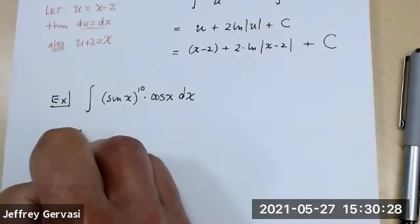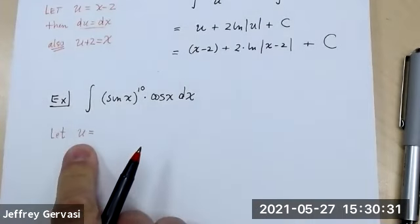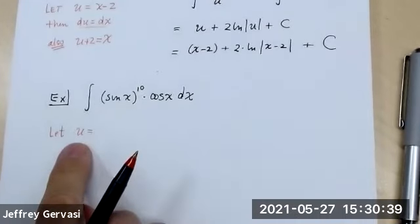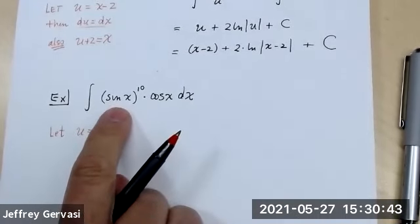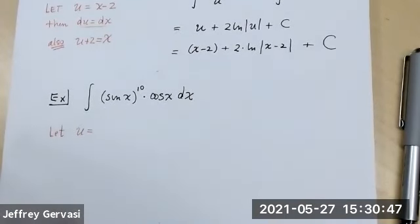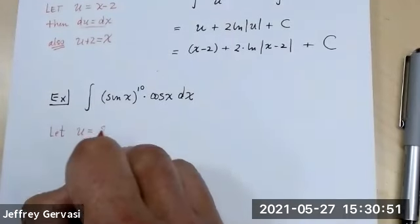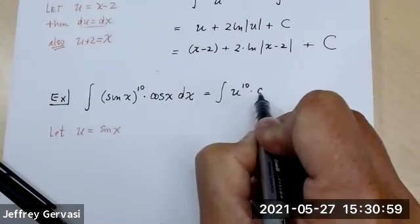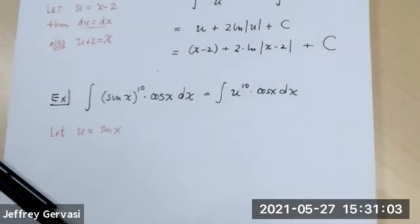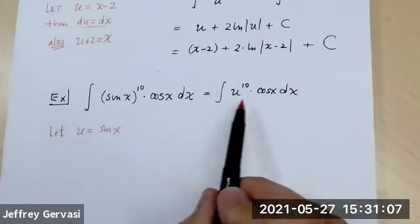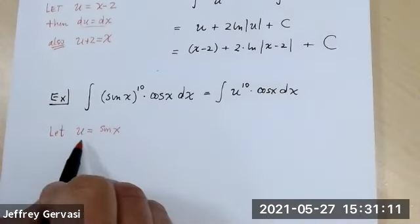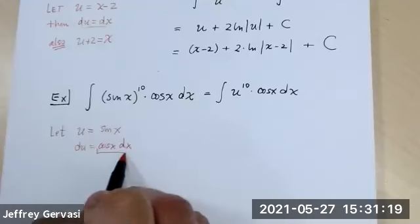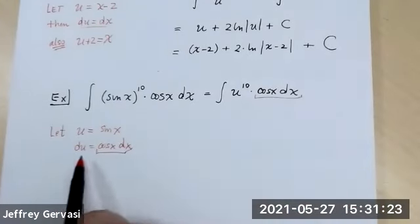When doing a substitution problem like this, it's a good rule of thumb — not a hard and fast rule — to try to let U equal the inside part of the function. In this case, the inside would be the sine function. So I'm going to let U equal sine of X. That means now the cosine of X and the DX both have to go; we're transforming the whole integral over to U's.